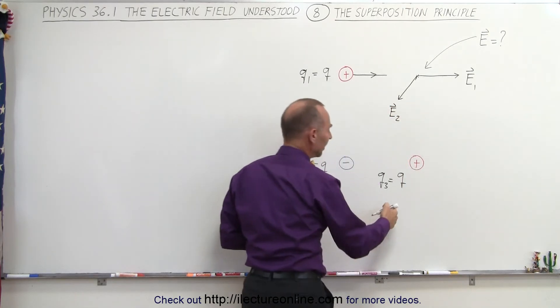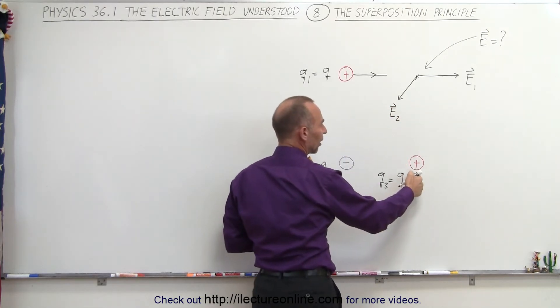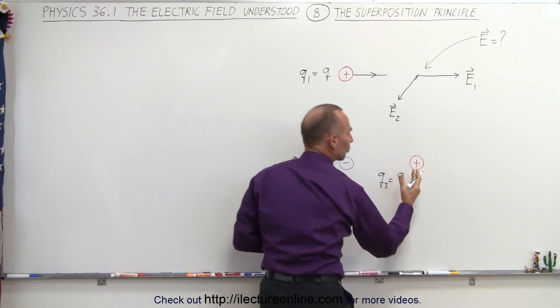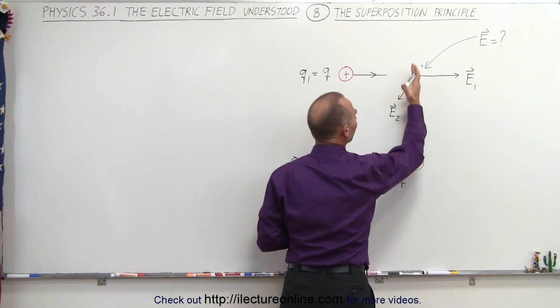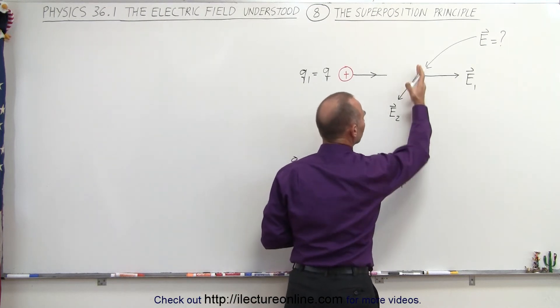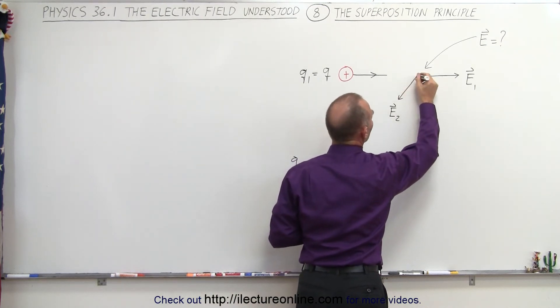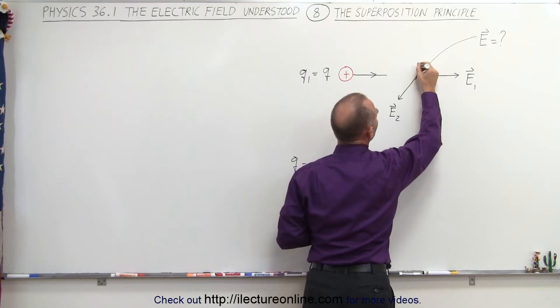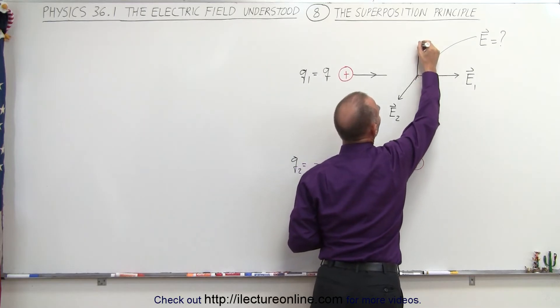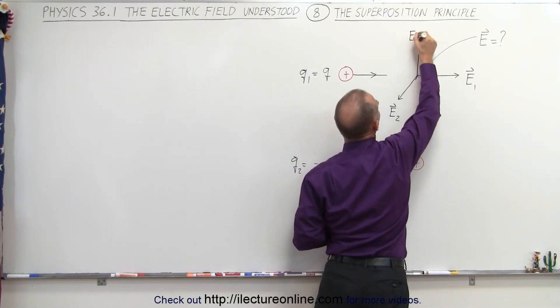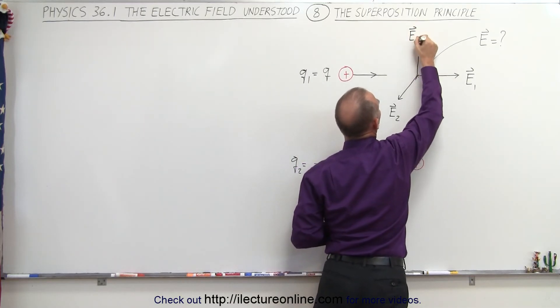And then finally, the electric field caused by this charge — since it's a positive charge — will be away from the charge. And so when we get over here, the electric field will be in this direction, and we'll call that field E3.